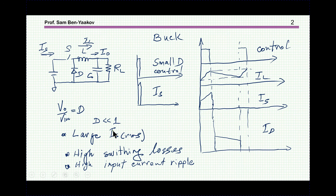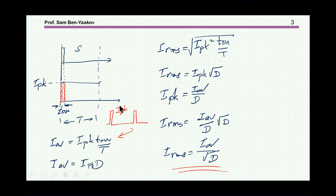The problem with these sharp pulses is that the current will be high — it's momentarily seeing the output current — causing high switching losses and high input current ripple. Because of these sharp pulses, we are going to see a lot of ripple at the input. This is the rationale for the tapped inductor, which is trying to resolve these sharp pulses.